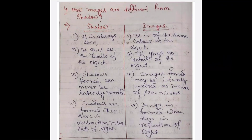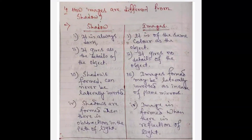How are images different from shadows? Shadows are always dark, but images are not dark — they are colorful. Shadows cannot give all the details of the object; images give all the details. Shadows can never be laterally inverted; images may be laterally inverted, as in the case of plane mirrors. Shadows are formed when there is obstruction in the path of light; images are formed when there is reflection of light.